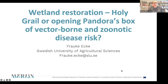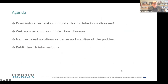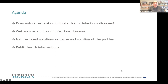I don't have all the answers, but I would like to raise some issues associated with wetland restoration. I will address whether nature restoration mitigates risk for infectious diseases, with a focus on vector-borne and zoonotic ones, and whether wetlands are a potential source of infectious diseases. If they are, are there nature-based solutions that can solve the problem, or are nature-based solutions even a cause of the problem? And if there's a problem, how can we mitigate or solve it? I will also look into a few public health interventions that can potentially be used.